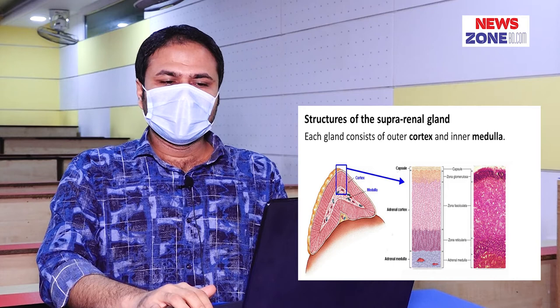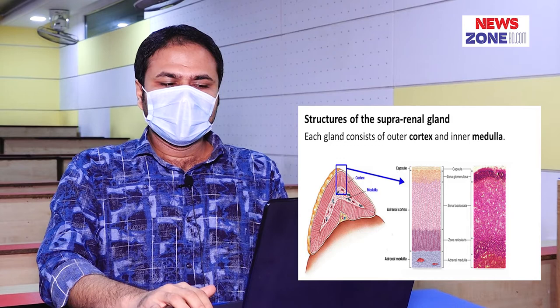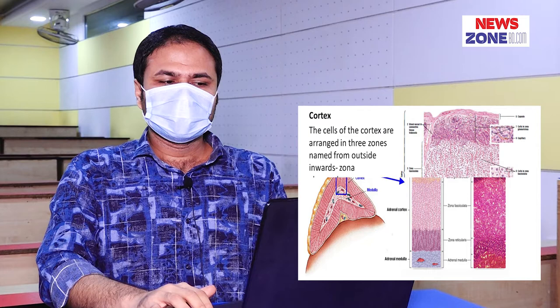Structure of the suprarenal gland. Each gland consists of the outer cortex and the inner medulla. The medulla forms one-tenth of the entire gland and is surrounded by the cortex except at the hilum.